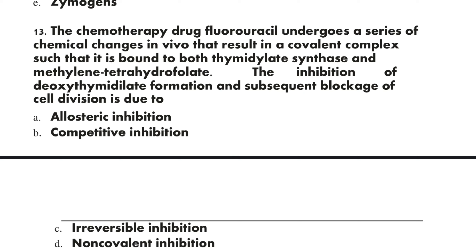Question 13: The chemotherapy drug fluorouracil undergoes a series of chemical changes in vivo that result in a covalent complex bound to both thymidylate synthetase and methylene tetrahydrofolate. The inhibition of deoxythymidylate formation and subsequent blockage of cell division is due to: A) allosteric inhibition, B) competitive inhibition, C) irreversible inhibition, D) non-covalent inhibition, E) non-catalytic inhibition. The correct option is C: irreversible inhibition.